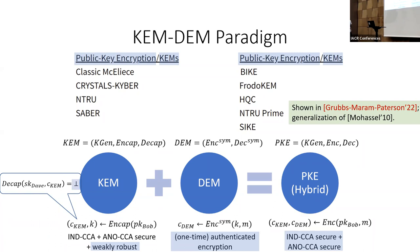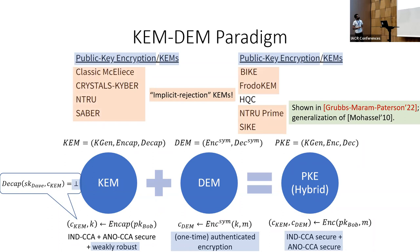Recall that weak robustness requires that if you encapsulate under Bob's public key but decapsulate under a different secret key, you should get back an error. This means that the decapsulation algorithm should be capable of returning an error symbol. Unfortunately, almost all of the NIST candidates except HQC are so-called implicit rejection KEMs — meaning the decapsulation algorithm never returns an error symbol; it always outputs some bit string but never an error. Hence, our KEM-DEM composition result is nice in theory, but if you want to apply it to the NIST KEMs, it does not apply.